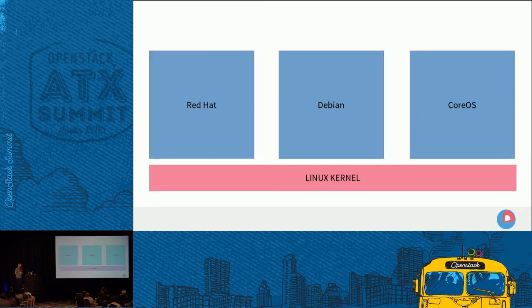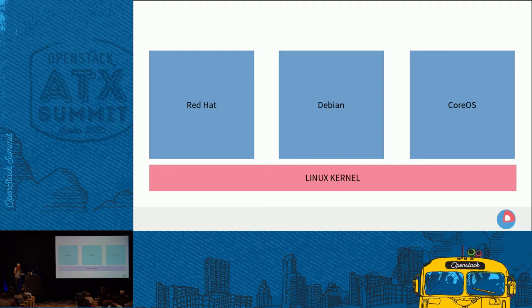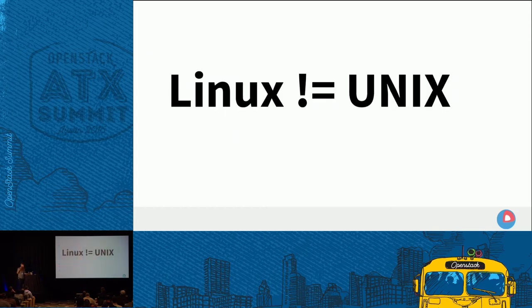Using this model you can put pieces together in a way that lets you use the tools you need. If there's a specific set of libraries needed inside a Red Hat host to run ActiveMQ, you can do that inside a Red Hat userland. If there's an application packaged for Debian but not Red Hat, you can spin up a Debian userland and do a native apt-get install of that package. Similarly with CoreOS, you could run a CoreOS instance and run additional containers on top of that.